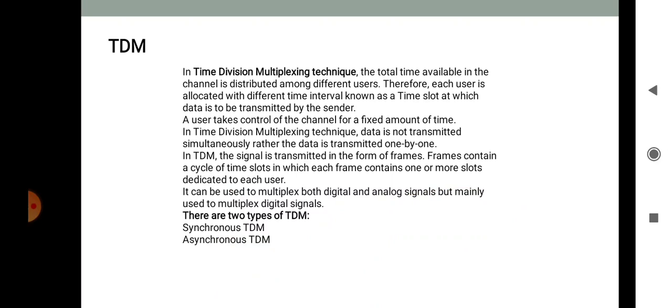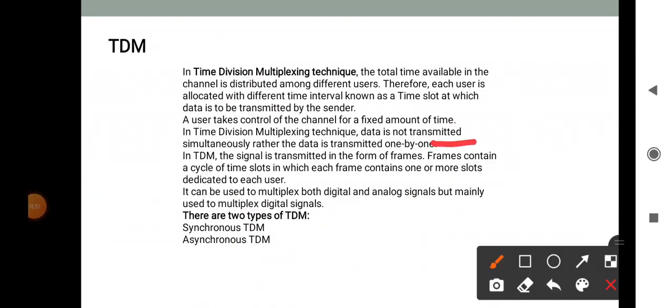Third is TDM — Time Division Multiplexing. In this technique, the total time available in the channel is distributed among different users. Each user is allocated a different time interval known as a time slot, during which data is to be transmitted by the sender. A user takes control of the channel for a fixed amount of time. In TDM, data is not transmitted simultaneously; rather, data is transmitted one by one. The signal is transmitted in the form of frames, and each frame contains a cycle of time slots. Each frame contains one or more slots dedicated to each user. TDM can multiplex both digital and analog signals but is mainly used for digital signals.